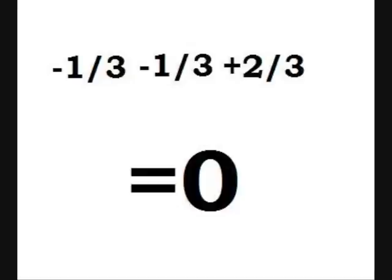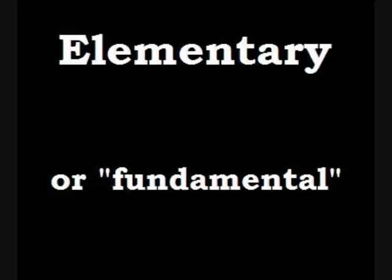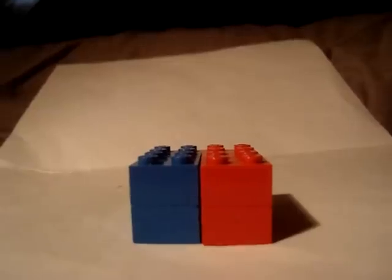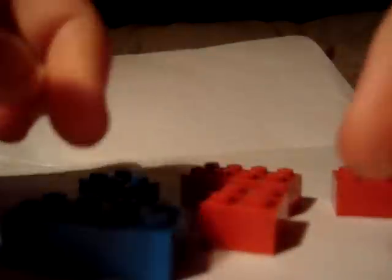Scientists believe you can't break quarks down any further, which means they are elementary or fundamental particles. It's like here, shown with Lego. The red block represents a proton, and the blue block represents a neutron. Each is made of three different parts. You can separate them into these three parts, but that's it. You can't break it down any further.